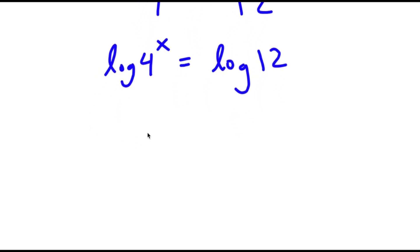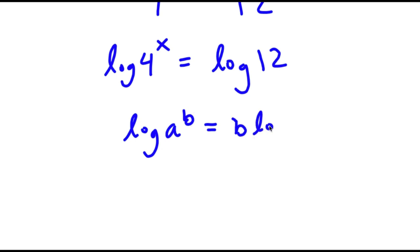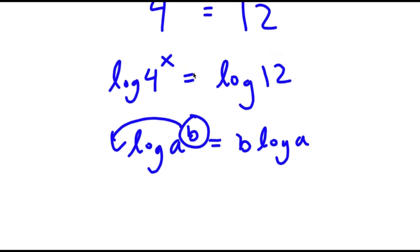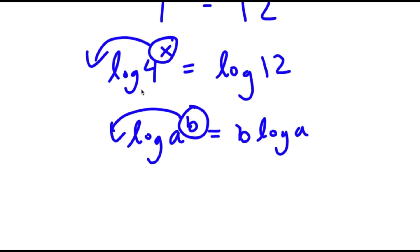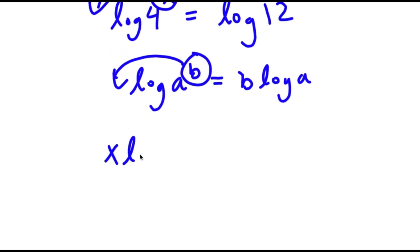If I have something in the form log a to the power of b, this is equal to b times log a, because all I have to do is simply move my exponent to the front. So for log 4 to the power of x, I can move x to the front. So this is going to equal x times log 4 is equal to log 12.